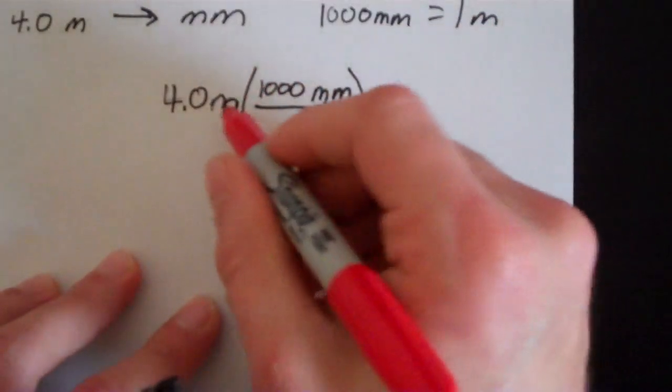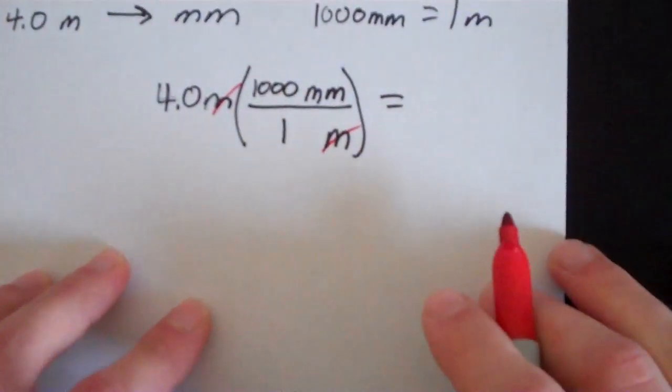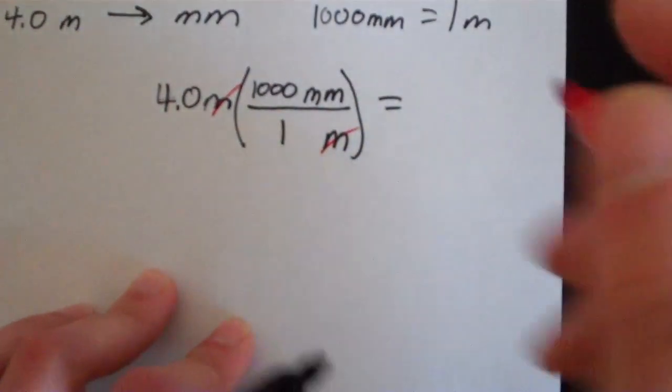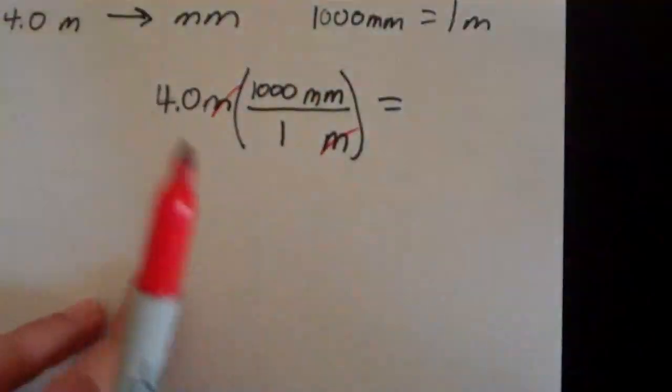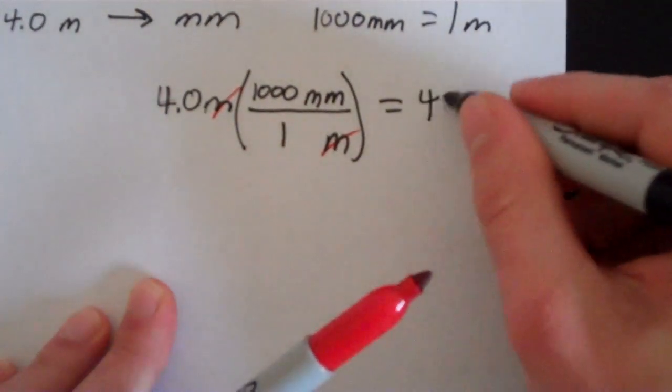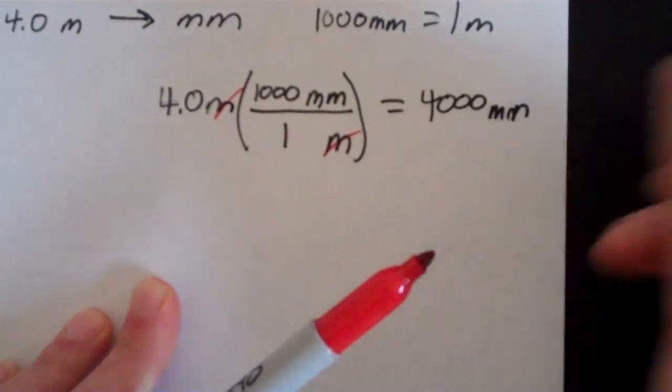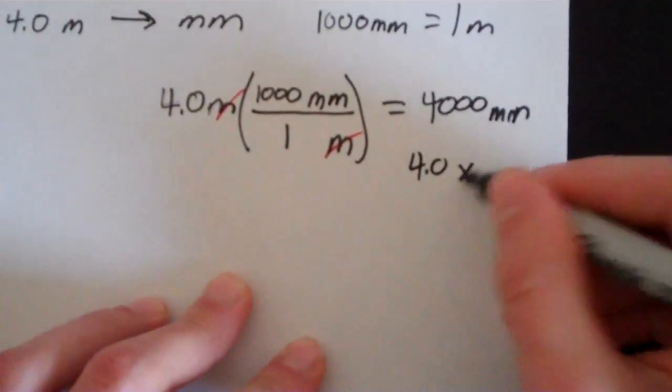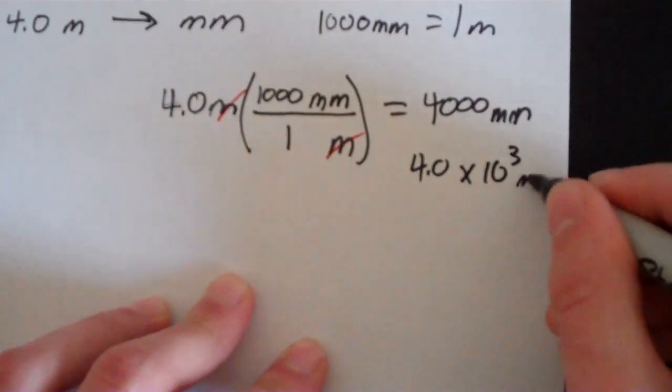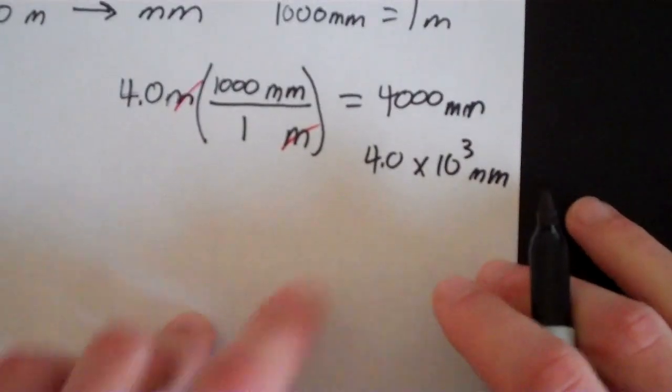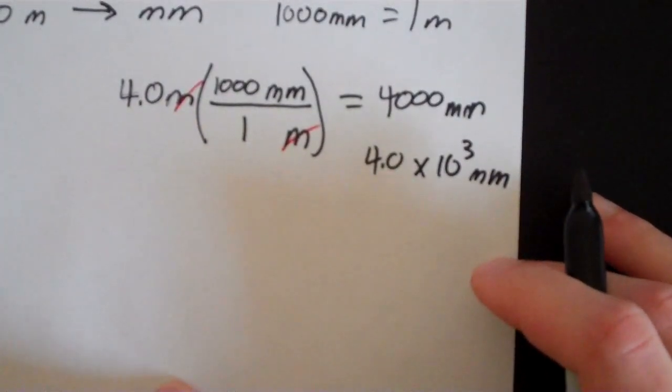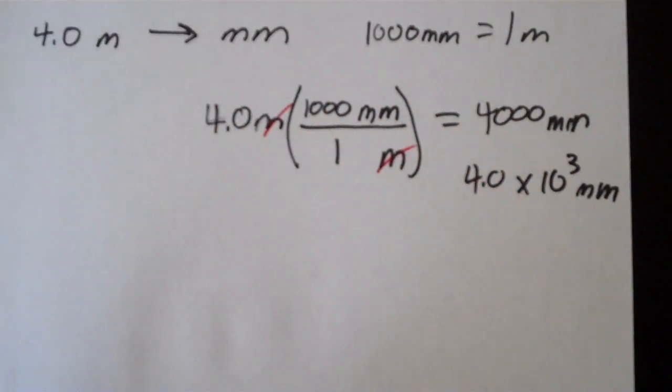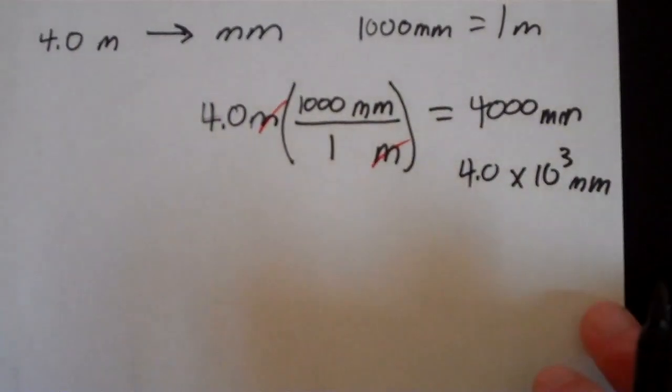So if we cancel our units out, we'll end up with nothing but millimeters. So this is 4000 millimeters, or 4.0 times 10 to the 3 millimeters if we want to put it with the correct number of significant figures. So let's go on to another one.